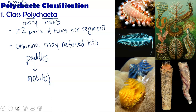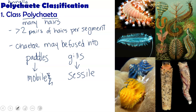Or the setae may be fused into gills, for the sessile worms. There are some worms that are sessile — examples are Christmas tree worms, which drill holes down into the coral and then stick their gills out in order to get food and water. Others can also be sessile and retract back into tubes.